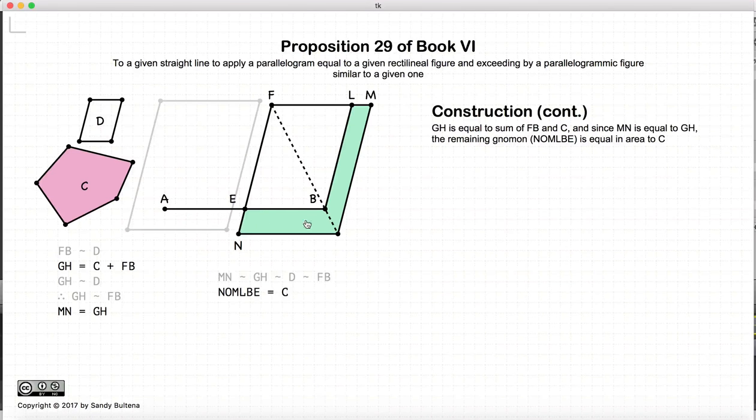NOMN is equal to C. Why? Because the whole parallelogram was equal to FB plus C. And then we remove the area of FB, so what we have left over is C. So this area here is equal to the area of C.